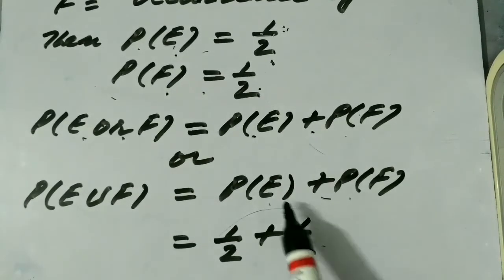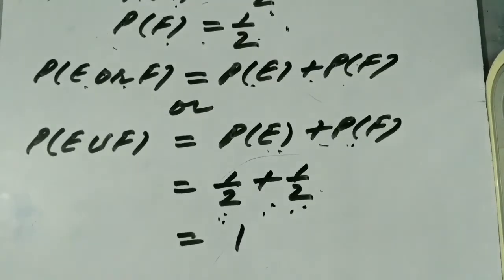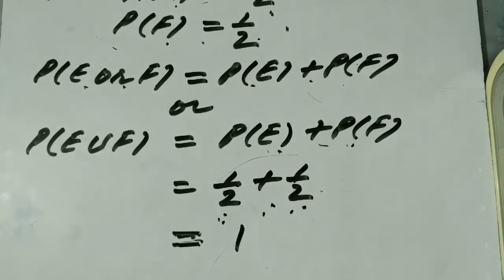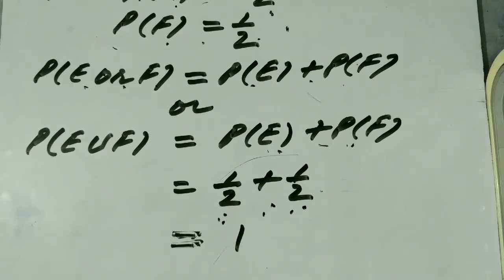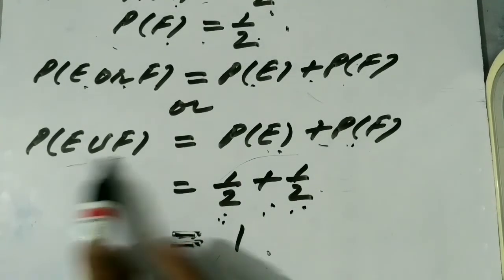Substituting the values of P(E) and P(F): half plus half is equal to one. As we know, an event whose probability is one is said to be a sure event — that means the event which will surely happen. So the probability of the event that either head occurs or tail occurs in the case of one toss is one. By common sense, at least one of these two events must happen, so the probability of the union of these two events is one.